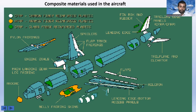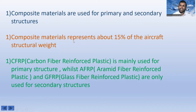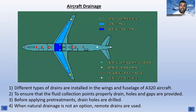Composite materials are used for both the primary and secondary structures. They represent about 15% of the aircraft structural weight. CFRP is mainly used for the primary structure, while AFRP and GFRP are only used for secondary structures.